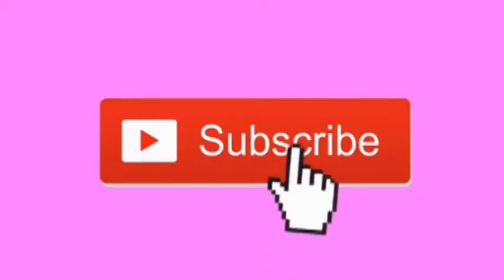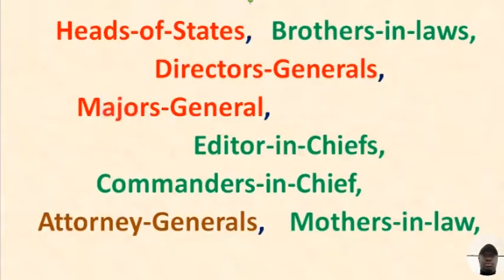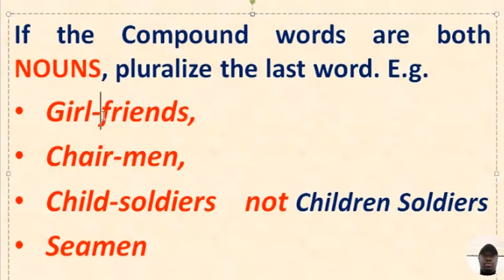But before we begin explaining the rules, please hit the subscribe button and let's reach a wider audience. Rule one: if the compound words are both nouns, just pluralize the last word. For example, girlfriends.